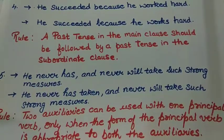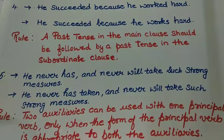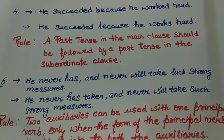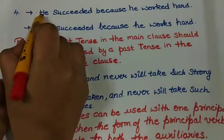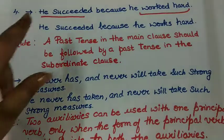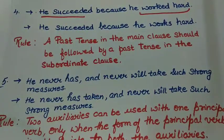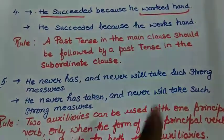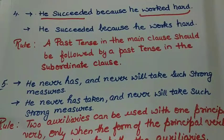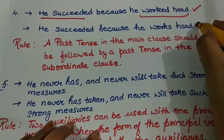The next sentence says: 'He succeeded because he worked hard.' The second version is: 'He succeeded because he works hard.' This rule is about tenses as well. The rule says a past tense in the main clause should be followed by a past tense in the subordinate clause. 'He succeeded' is the main clause and 'worked hard' is the subordinate clause. Since 'succeeded' is past tense, I must use 'worked' — not 'works' — in the subordinate clause. So the first version is correct and the second is wrong.